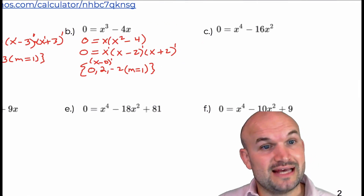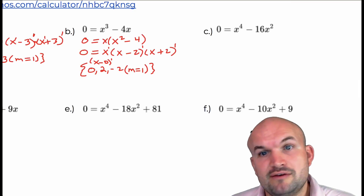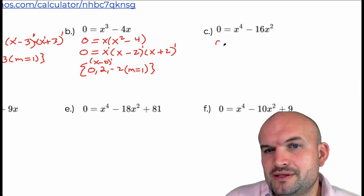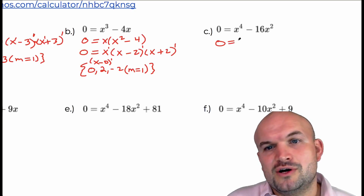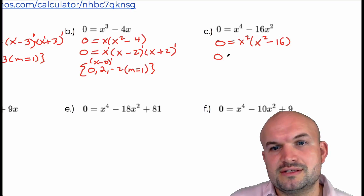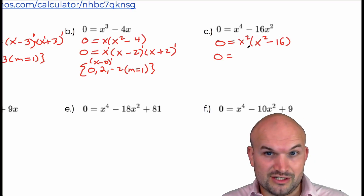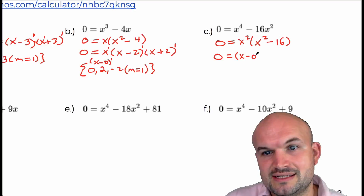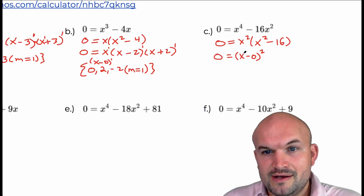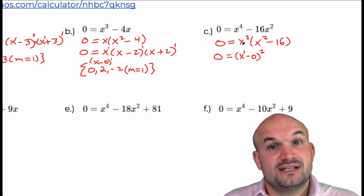Now we have another example raised to the fourth power. When you have two terms, always look for the GCF first, then possibly the difference of two squares. I can take out an x squared, leaving x² minus 16. I can write x² as (x minus 0) squared — that's a linear factor raised to the second power, which tells us the zero at zero has a multiplicity of two, which is even.